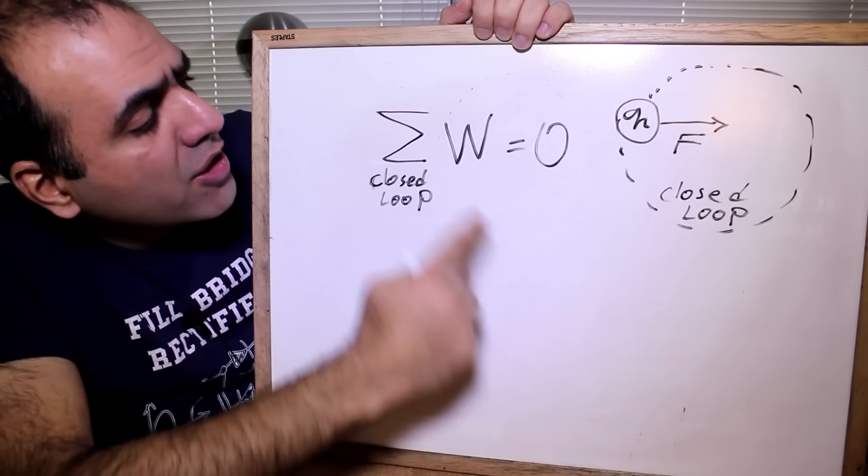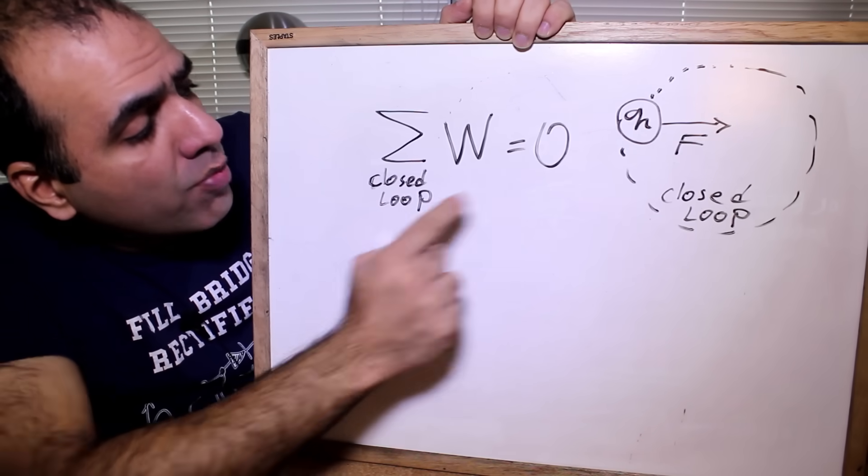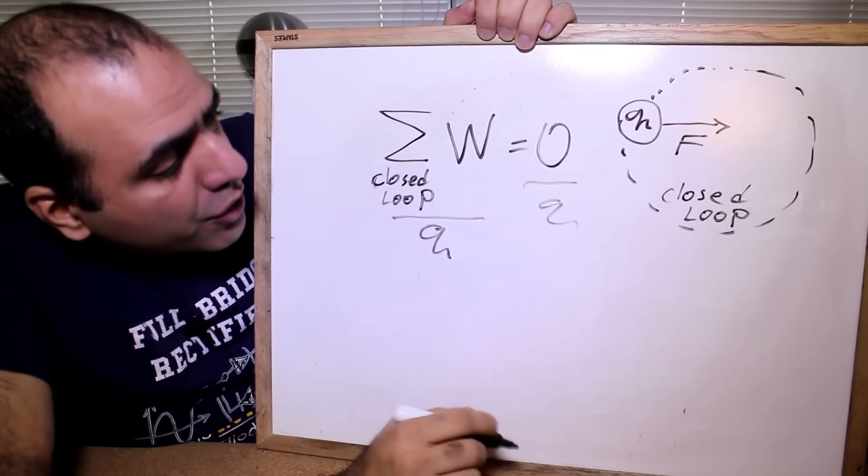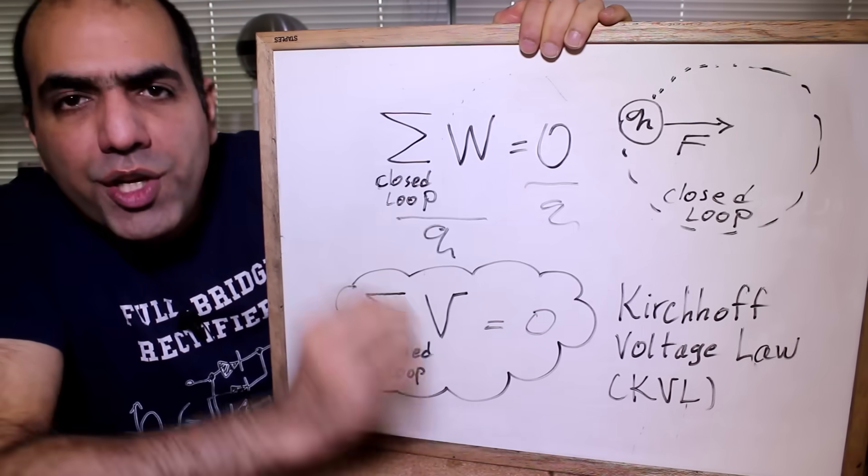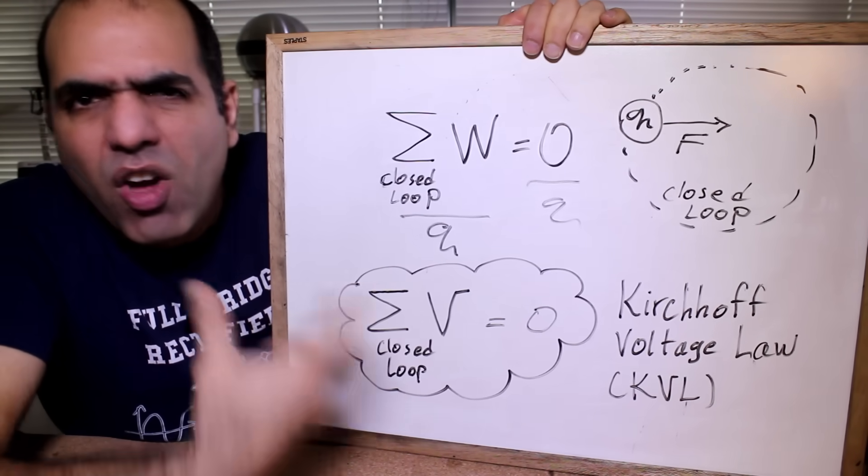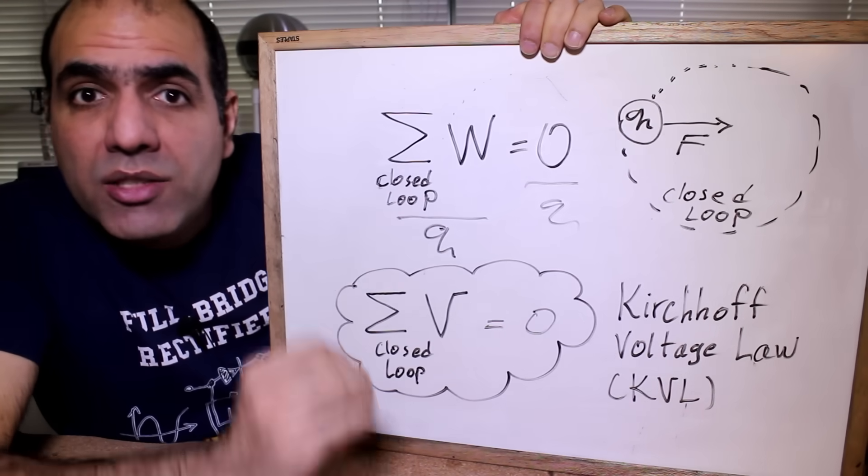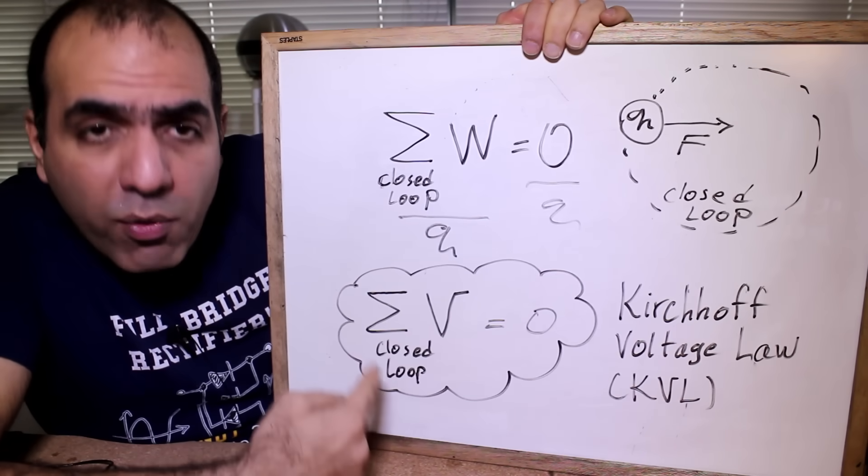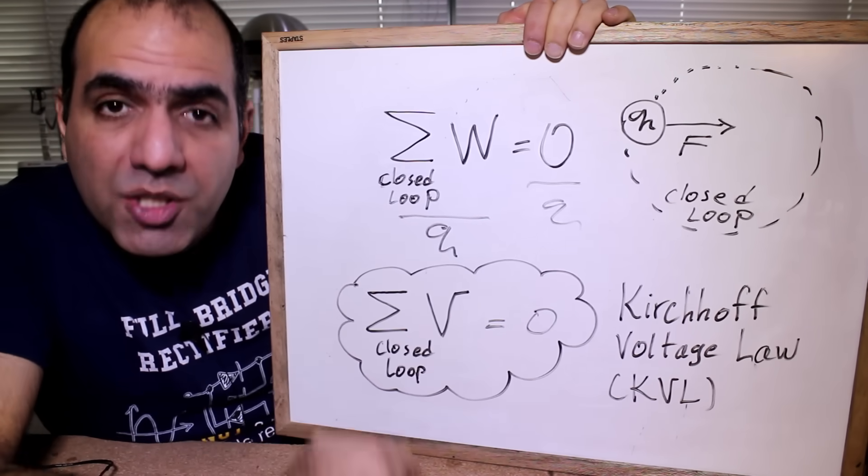For the same reason, the sum of all energies acting on the charge in a closed loop must be zero. We can divide these by Q to get voltage. And we arrive at the original definition of Kirchhoff's voltage law. Some people call him Kirchhoff, I call him Kirchhoff. It is based on the law of conservation of energy and says at any point in time, the sum of all voltages in a closed loop must be zero.